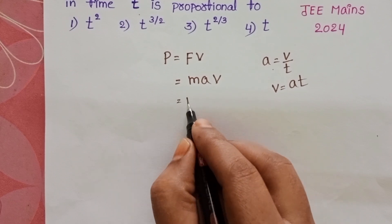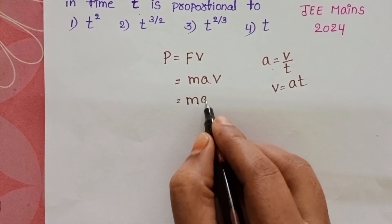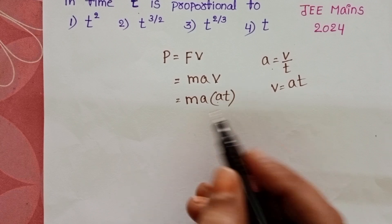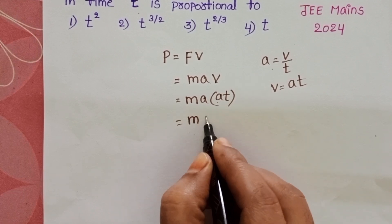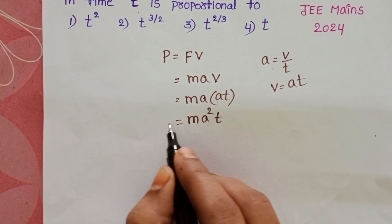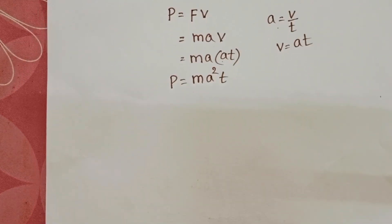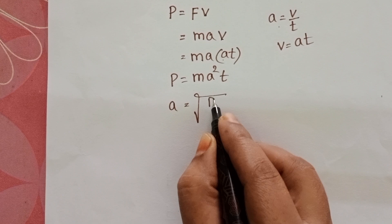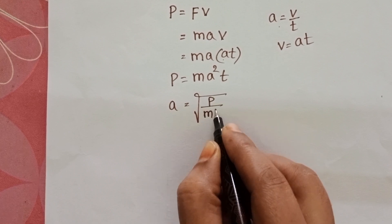Substitute here mass into acceleration. In place of V, A into t. Then M A square t. From this, acceleration equals square root of power by mass into time.